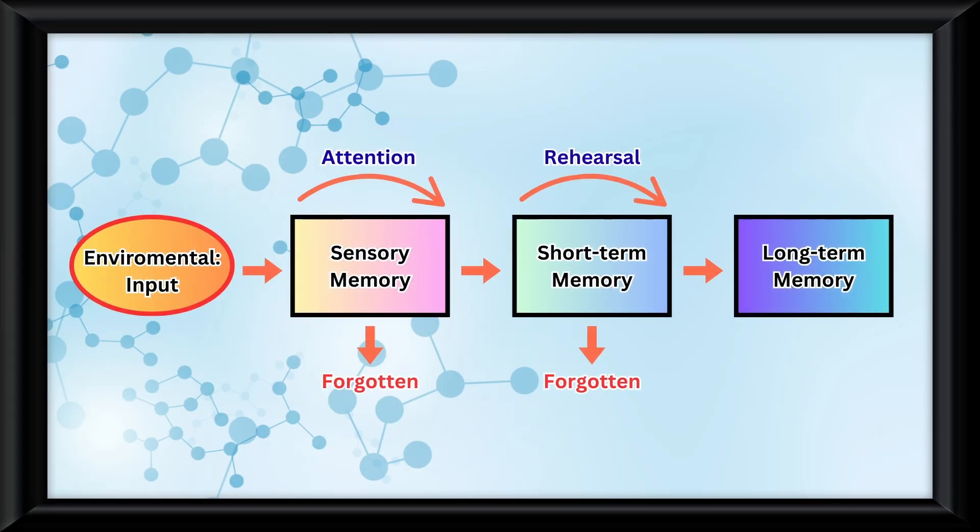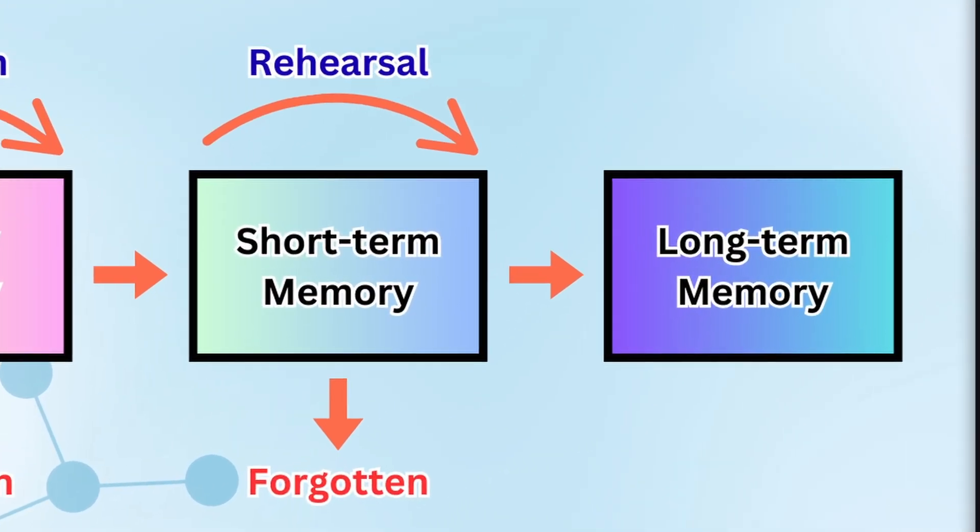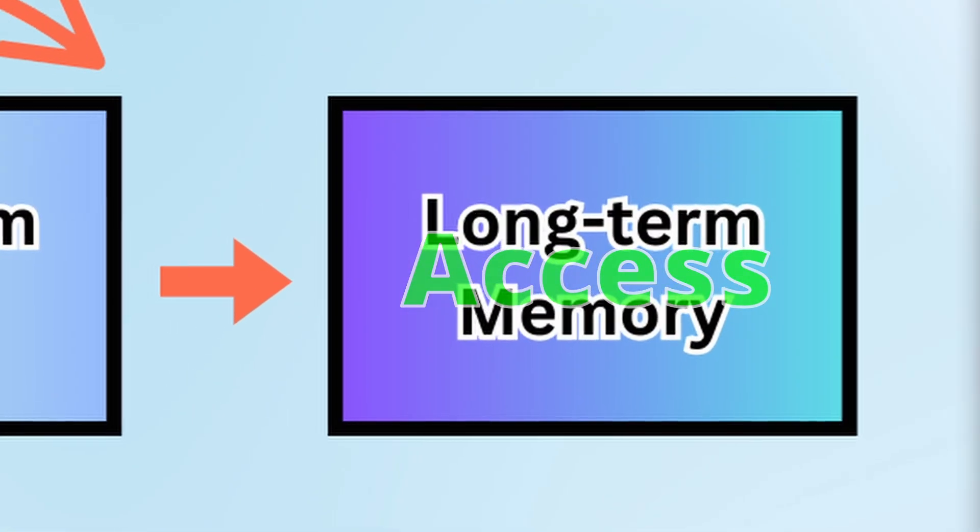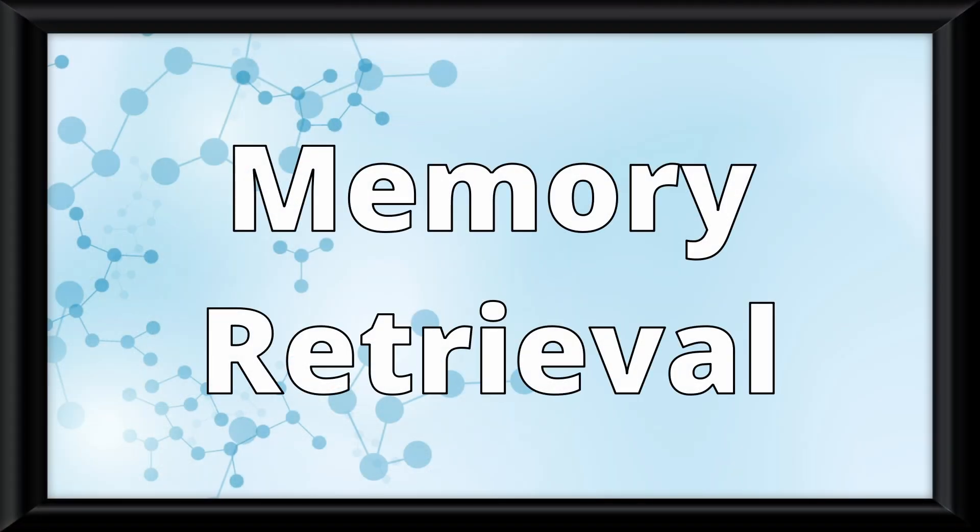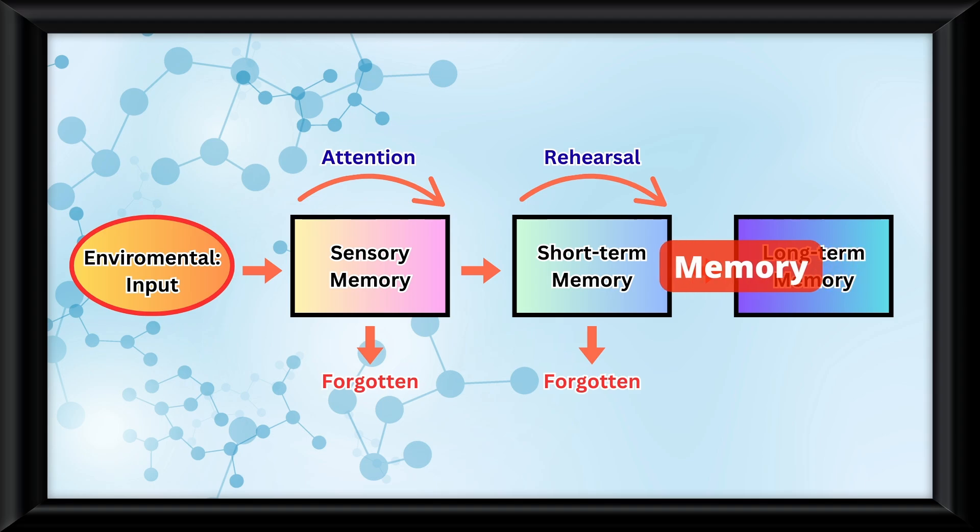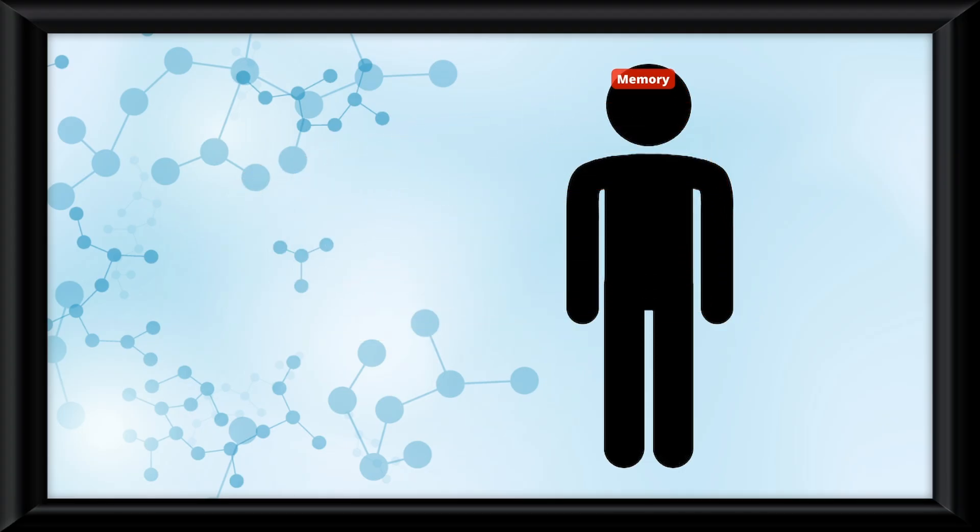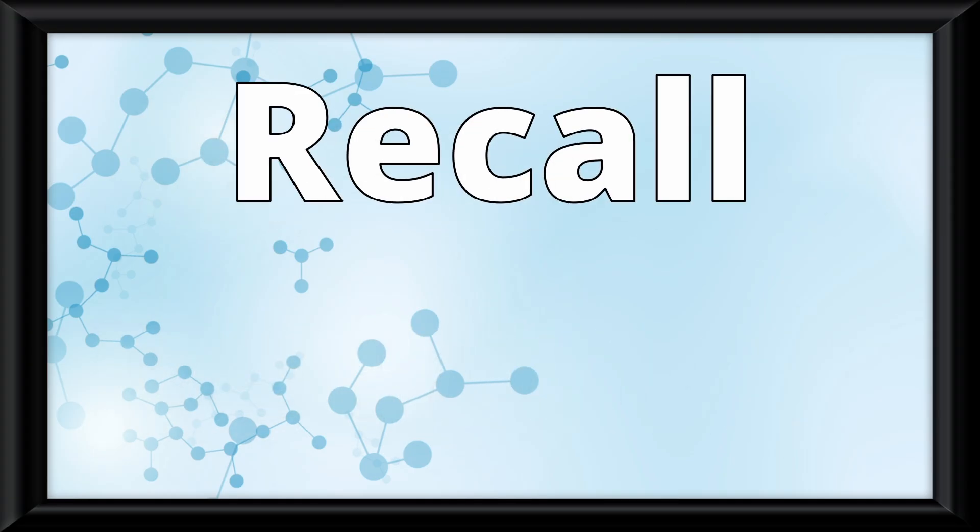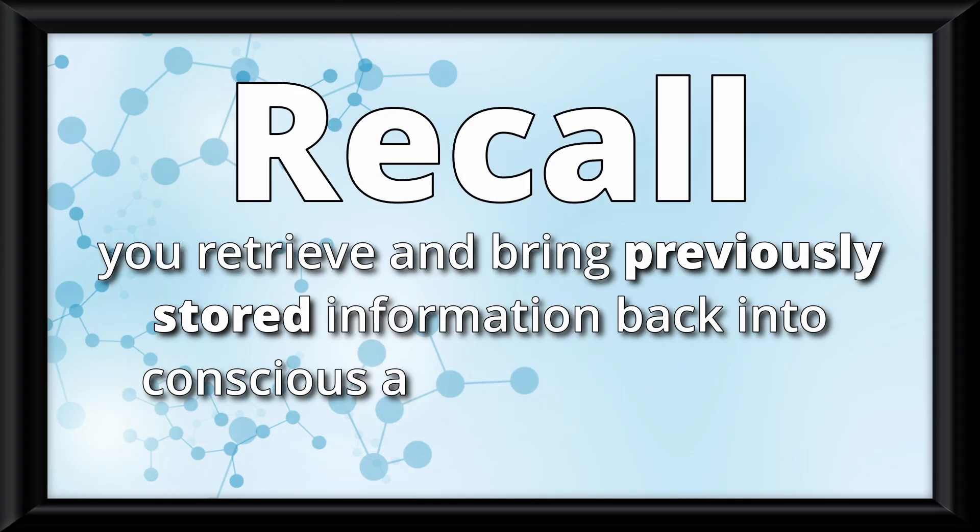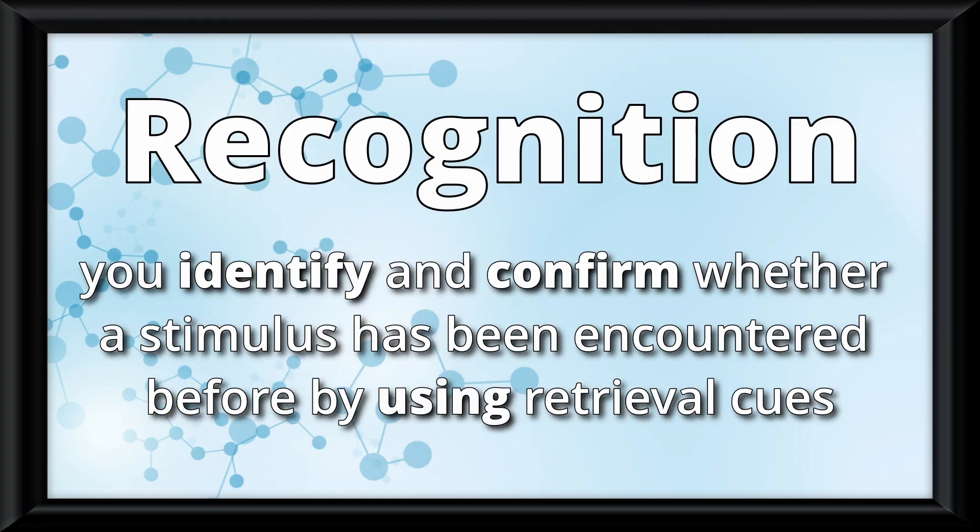I know you've seen this model of memory from me like a billion times by now, but did you know I actually forgot something on it? When something is in your long term memory, you can't just access it. I like to imagine long term memory as a library of books. If you actually want to remember any of this content, you need to walk through it and actually find the correct book. This is a process known as memory retrieval. You are trying to get your memory back from your long term memory into your working memory so you can recall it, but some memories are easier to recall than others. Memory retrieval occurs by one of two things: recall, which is where you retrieve and bring previously stored information back into conscious awareness without any cues, or recognition, where you identify and confirm whether a stimulus has been encountered before by using retrieval cues.